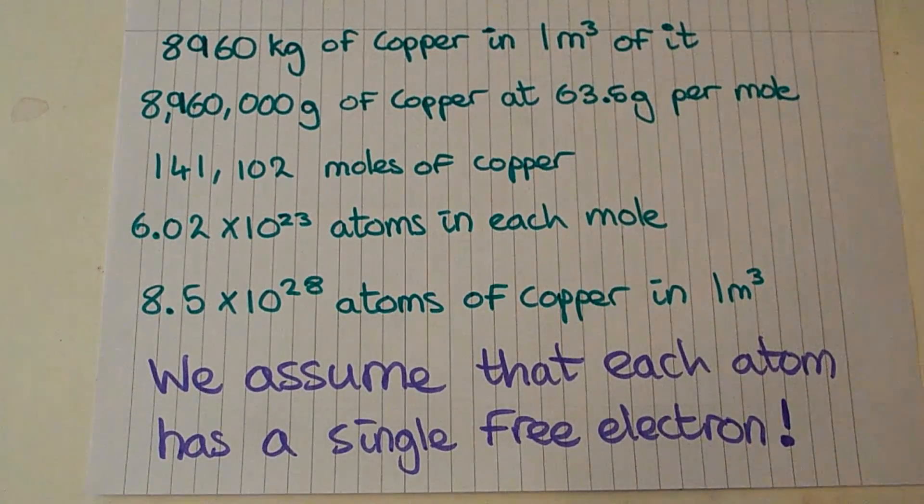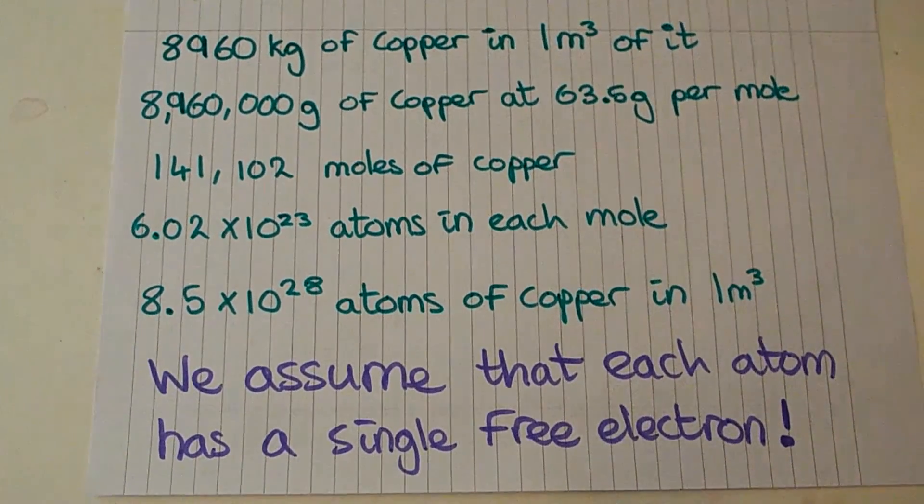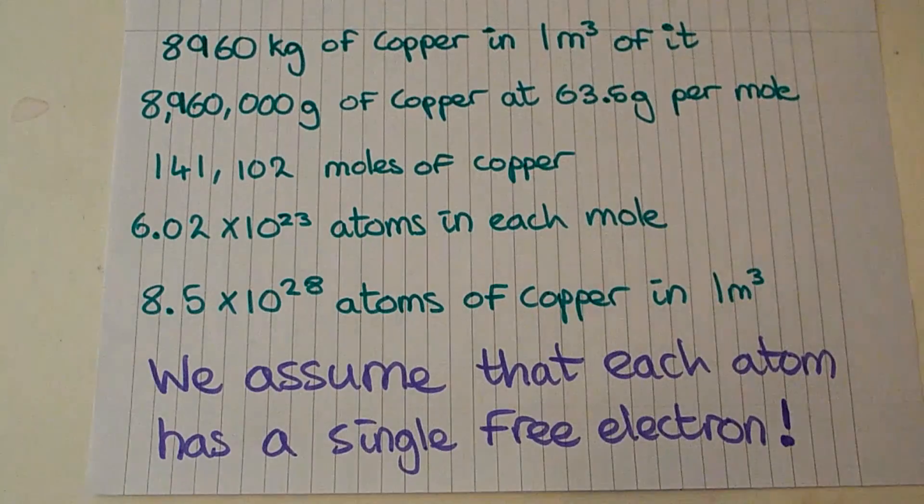So in an exam you might have this question and then the question I just did a few minutes ago about working out the drift velocity of the electrons when the current is 1.5 amps with copper and all the other details.